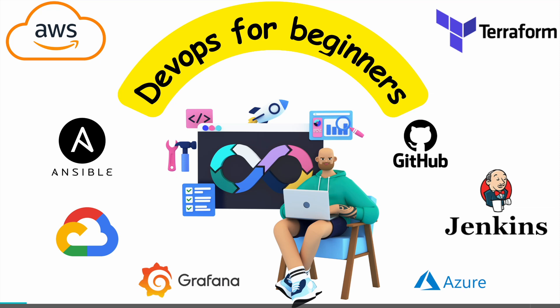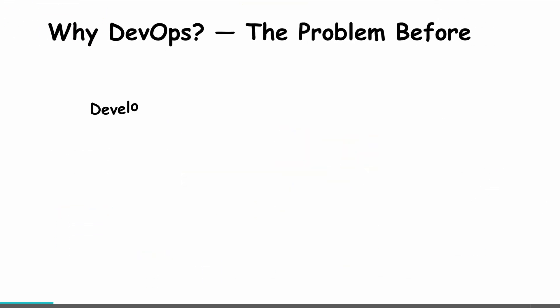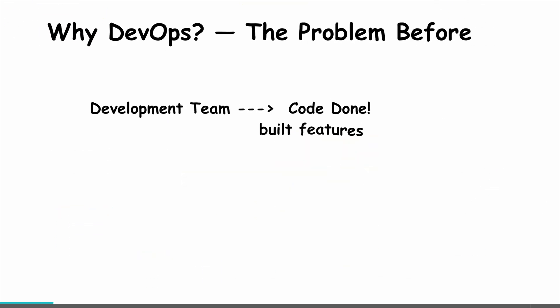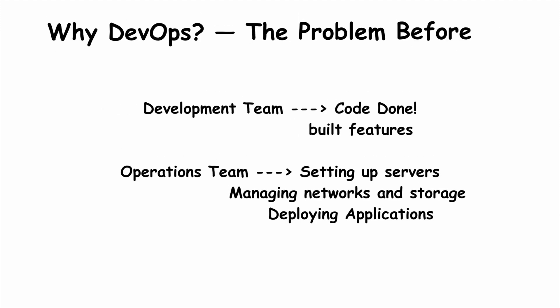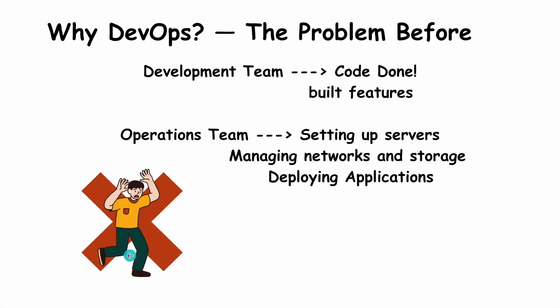So you can understand what DevOps is and why it matters. Before DevOps, companies usually had two separate teams. One team was the development team — they wrote the code and built features. The other team was operations — they took care of the servers and made sure everything ran smoothly. The problem is these teams don't really work together.